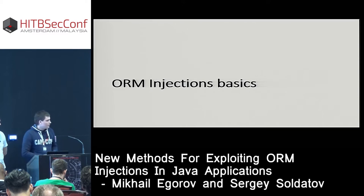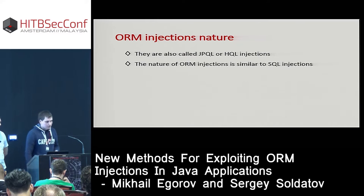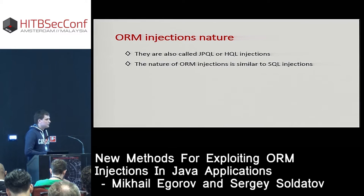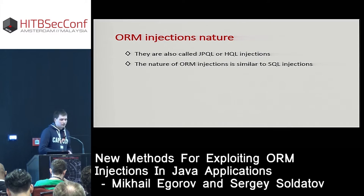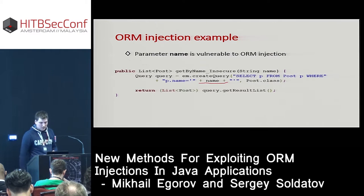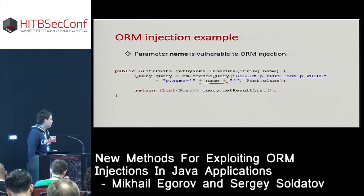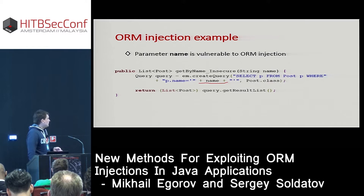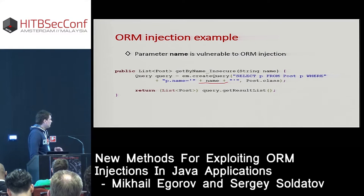ORM injections can also be called JPQL injections or HQL injections when we talk about Hibernate ORM. ORM injections are similar to classic SQL injections in how they look in source code. Here on the slide you can see an example of a function vulnerable to ORM injection: a JPQL query is constructed by string concatenation — there is a static part that concatenates with a name parameter controlled from outside the function — then this query is used to get data from the database.